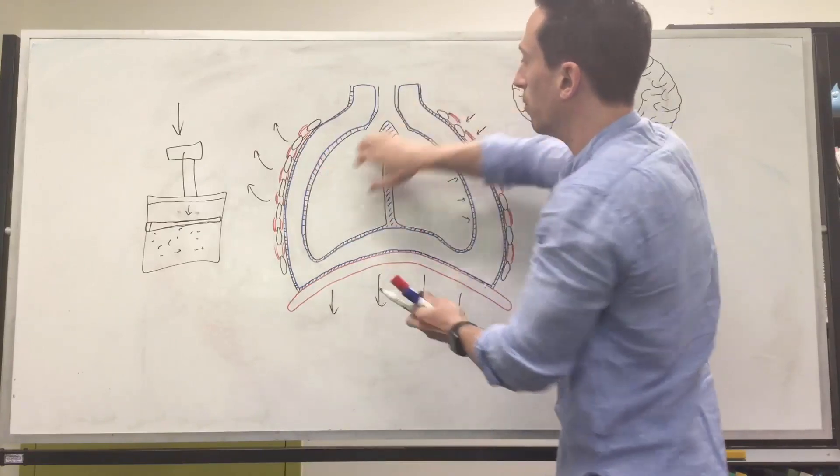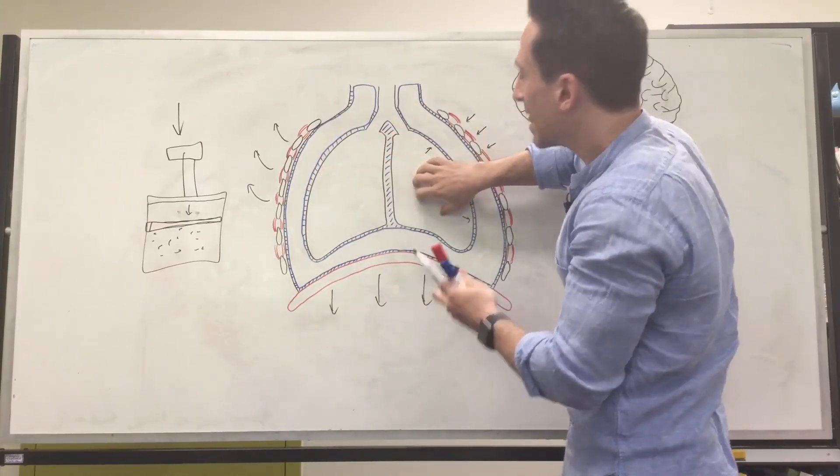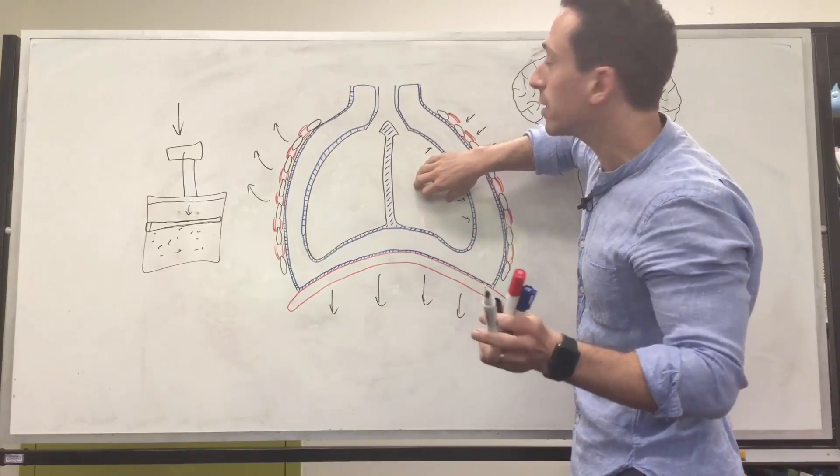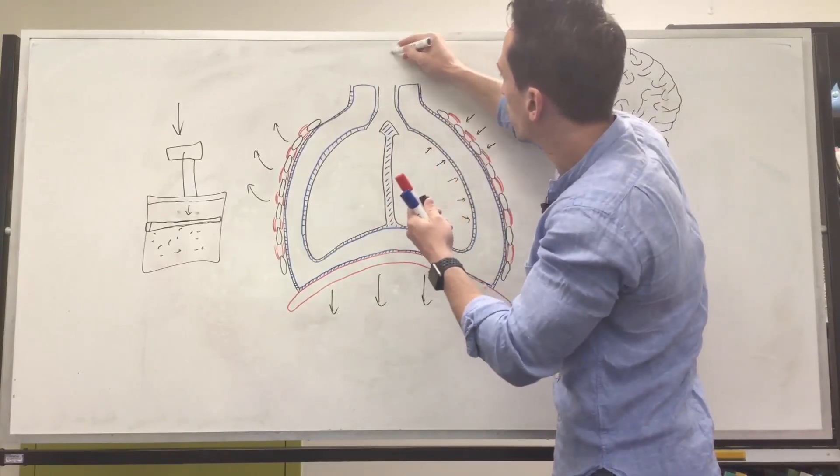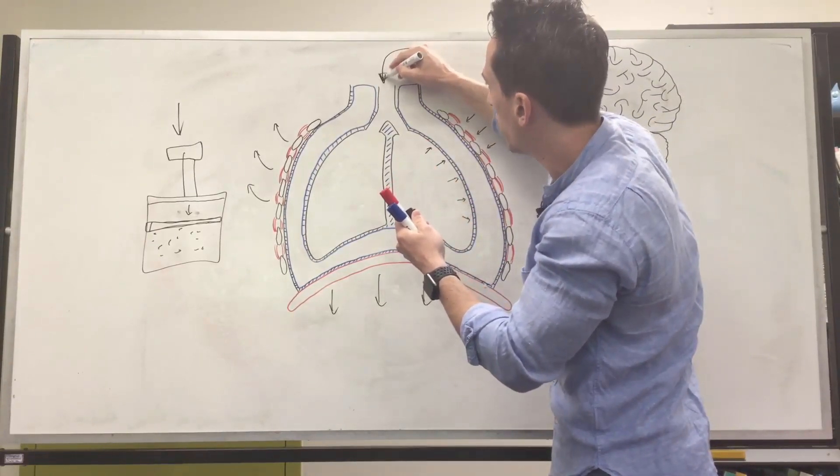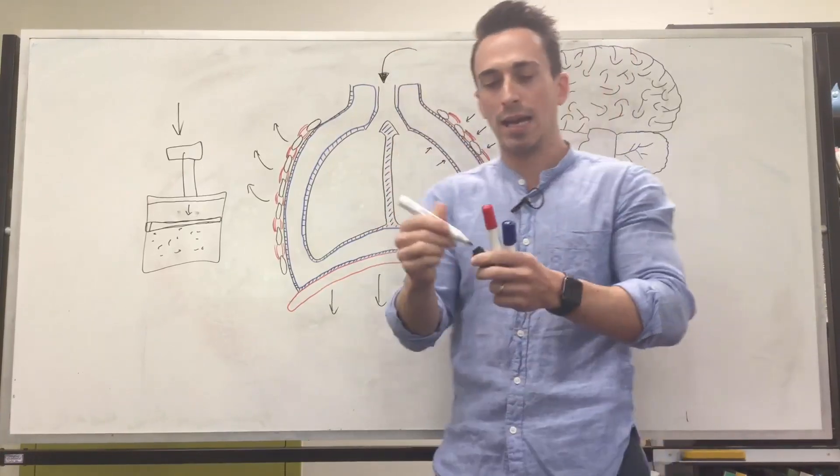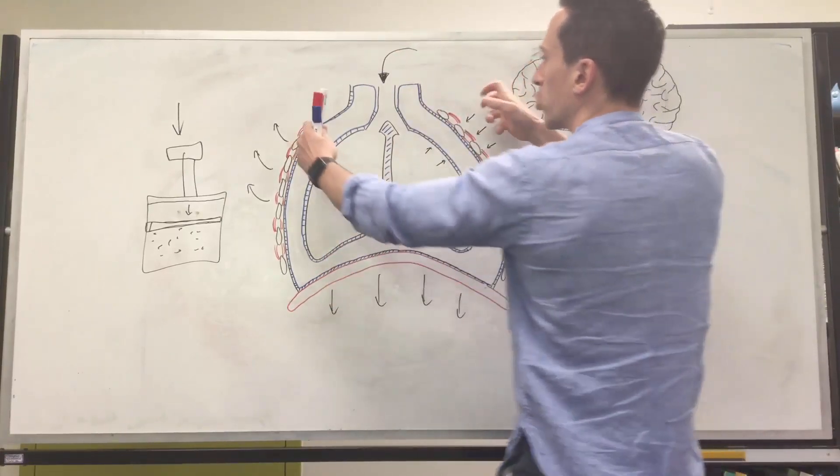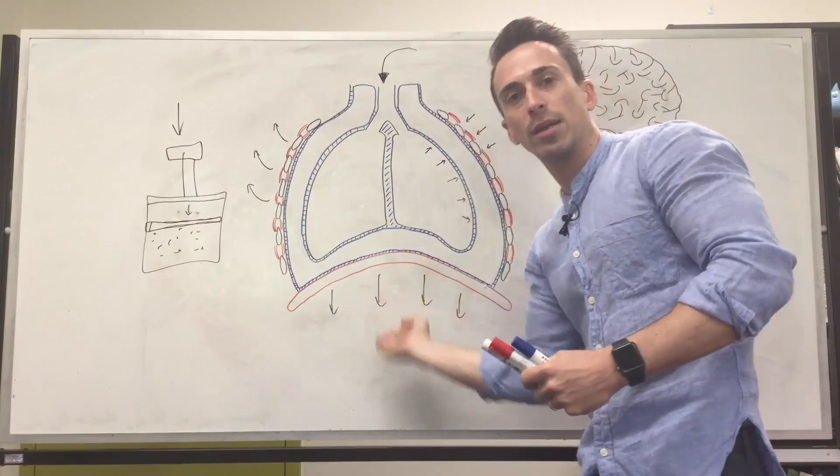So increasing the volume of the lungs, therefore the pressure is lower. And if the pressure is lower in the lungs, air from outside wants to rush in. Remember, gas has always moved down a pressure gradient. And how did we do this? We did this by contracting the rib cage up and out and contracting the diaphragm down.